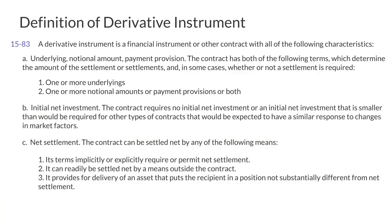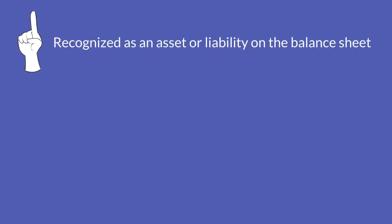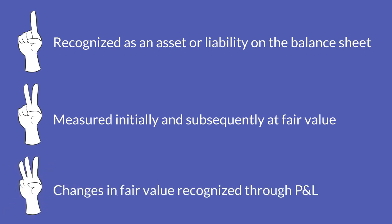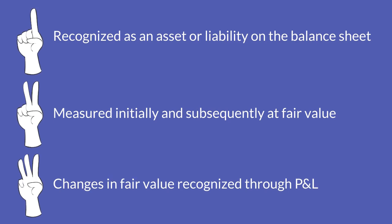If a contract is within the scope of ASC 815, meets all three characteristics, and is not designated in a qualifying hedging relationship, then it would be recognized on the balance sheet as an asset or liability, measured at fair value, with all subsequent changes in fair value from period to period recognized through earnings.